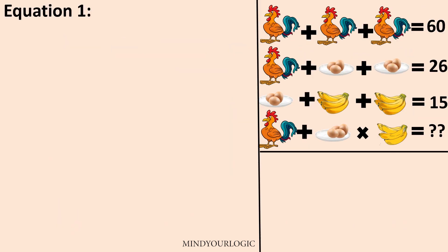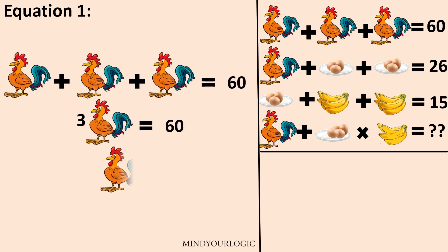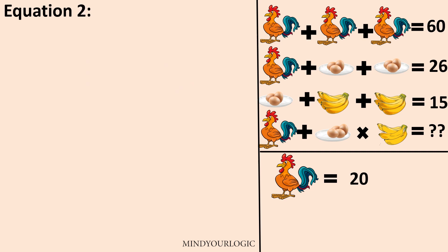Let's see the first equation. In the first equation, we have 3 hens equal to 60. So 1 hen will be equal to 20.